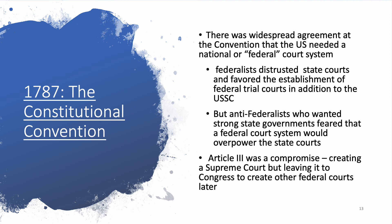At the Constitutional Convention, there was widespread agreement that there had to be a federal court system. The question was how many courts and what would they be allowed to do. The Federalists pushed for a whole system of federal courts and a Supreme Court — they didn't trust the state courts. But the Anti-Federalists wanted strong state governments and strong state courts, and a weak federal court system so it couldn't overpower local courts. Article 3 was a compromise: it created only the U.S. Supreme Court but left it up to Congress to create other federal courts later.